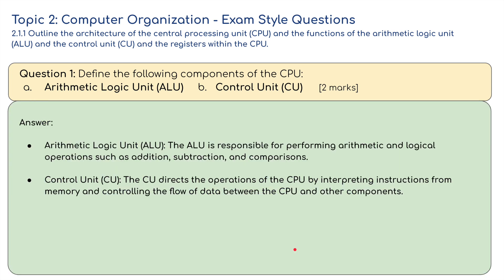The arithmetic logic unit (ALU) is responsible for performing arithmetic and logical operations, such as addition, subtraction, and comparisons. The control unit (CU) directs the operations of the CPU by interpreting instructions from memory and controlling the flow of data between the CPU and other components.